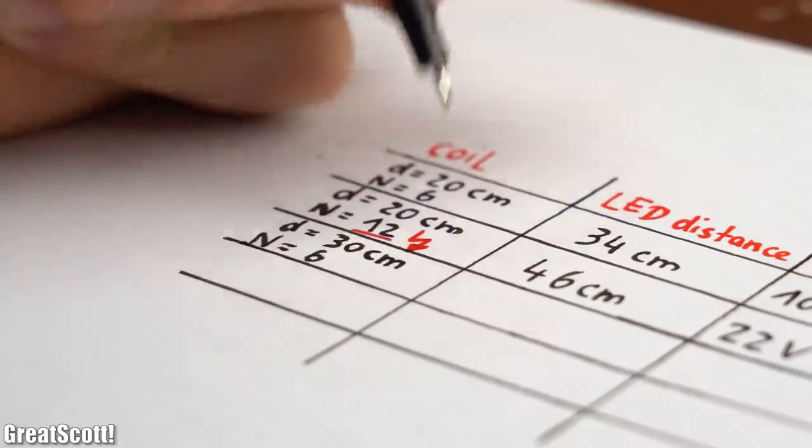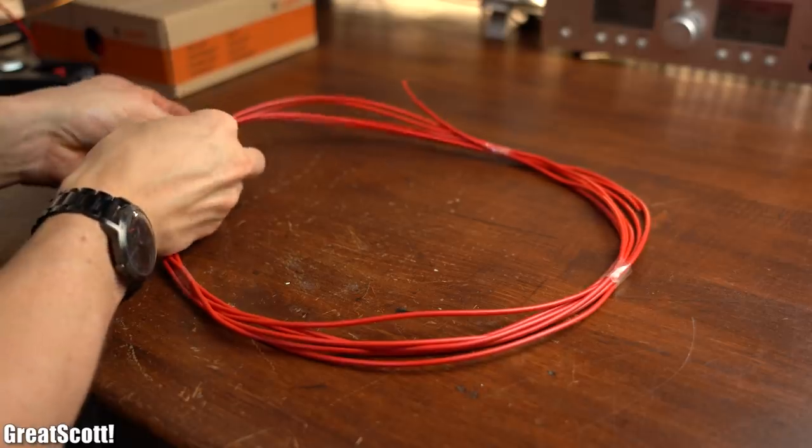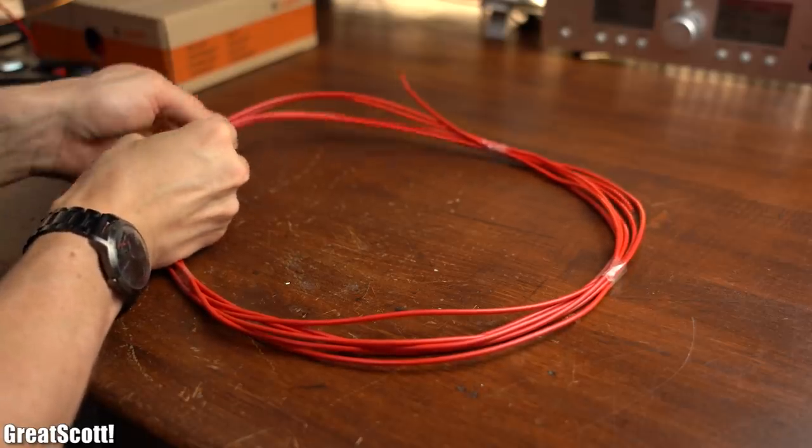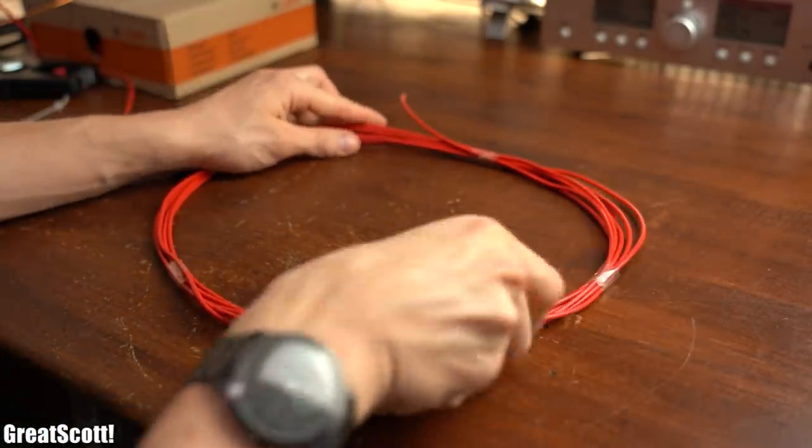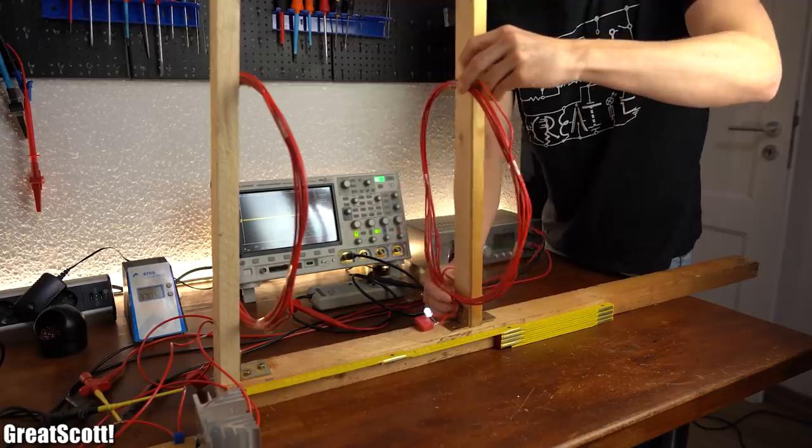So maybe a bigger diameter is the solution, which is why next I created a coil pair with a diameter of 30cm and 6 turns as well. And would you look at that!